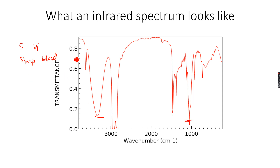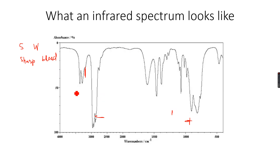Peaks can also be weak and sharp, as you can see with this peak, or they can be weak and broad. Looking at the other spectrum, this peak is weak and broad. So strong and sharp, strong and broad, weak and sharp, weak and broad — you have to describe peaks using all these terms: strong, sharp, weak, and broad.